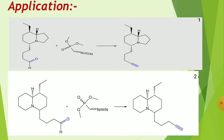The application of the Seyferth-Gilbert Homologation is alkyne formation: an aldehyde or ketone (carbonyl group) reacts with the reagent and butoxide base, then through a phosphonate intermediate and carbene intermediate, an alkyne product is formed.